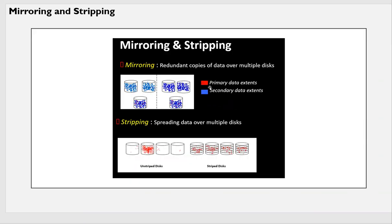Mirroring and striping: mirroring means having a duplicate copy of your data. If you have data ABC inserted into your disks, that ABC will be written to mirrored copies as well. If A is written here, B here, C here — the mirrored copy will be written to those same three. In case a disk goes down, the mirrored copy will be available to serve the data.